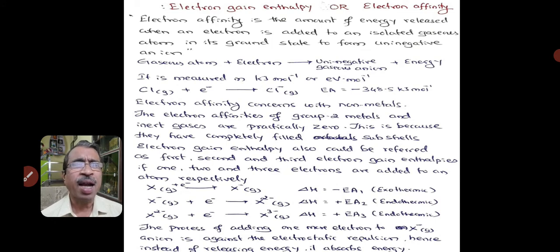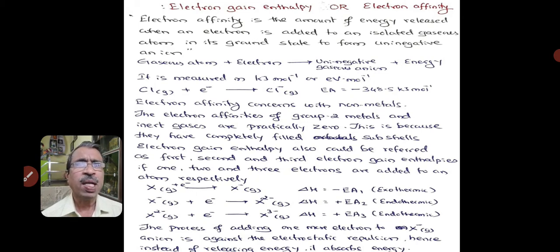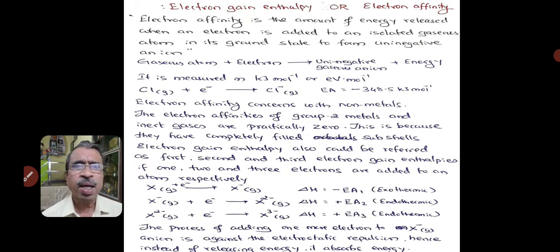When energy is supplied to a gaseous atom, we get a unipositive gaseous ion and an electron is given out — that is the case of ionization enthalpy. Both these energies are measured in kilojoules per mol or electron volt per mol.